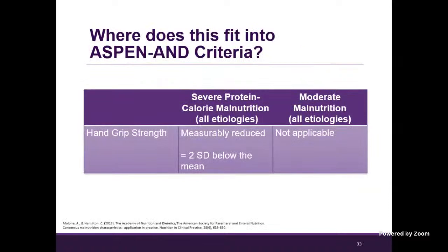Hand grip strength that is two standard deviations below the mean using a hand dynamometer meets criteria for severe malnutrition, and it's not applicable to the moderate malnutrition diagnosis.